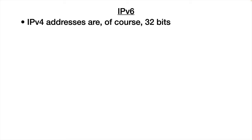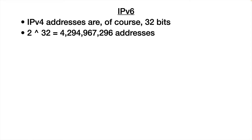IP version 4 addresses are 32 bits. With 32 bits, each bit can have two possible values — 0 or 1. So doing simple statistics, 2 to the 32nd power gives us about 4.2 billion addresses. Back in the 1970s when IP was being created, they could never comprehend 4 billion IP addresses being given out — that was approximately the population of Earth. But in 2011, we ran out.